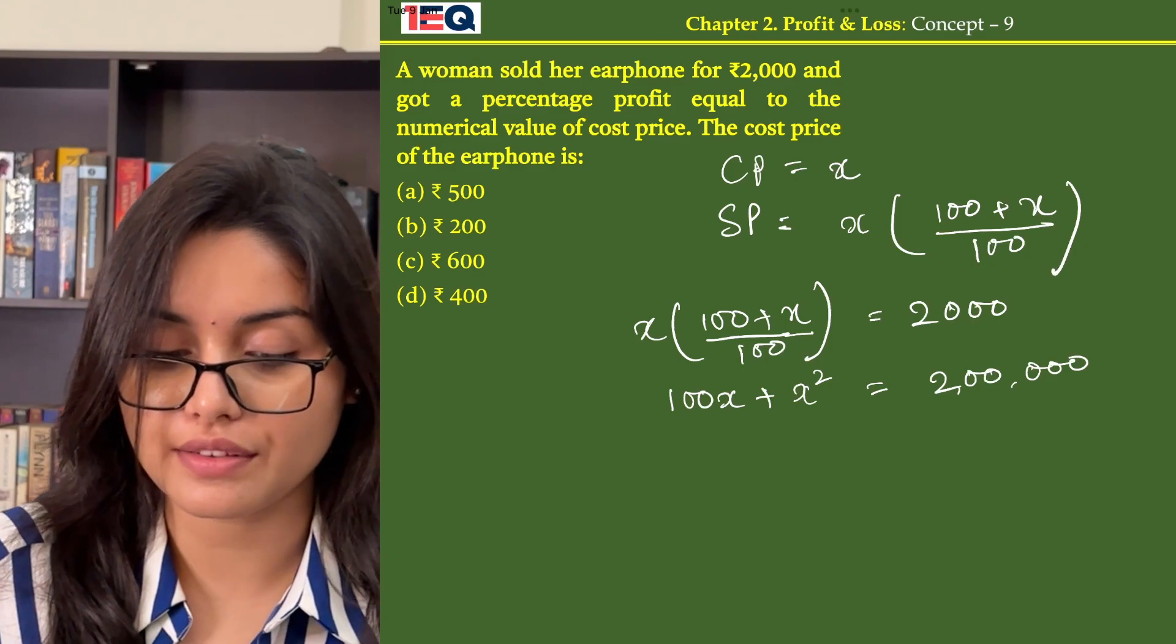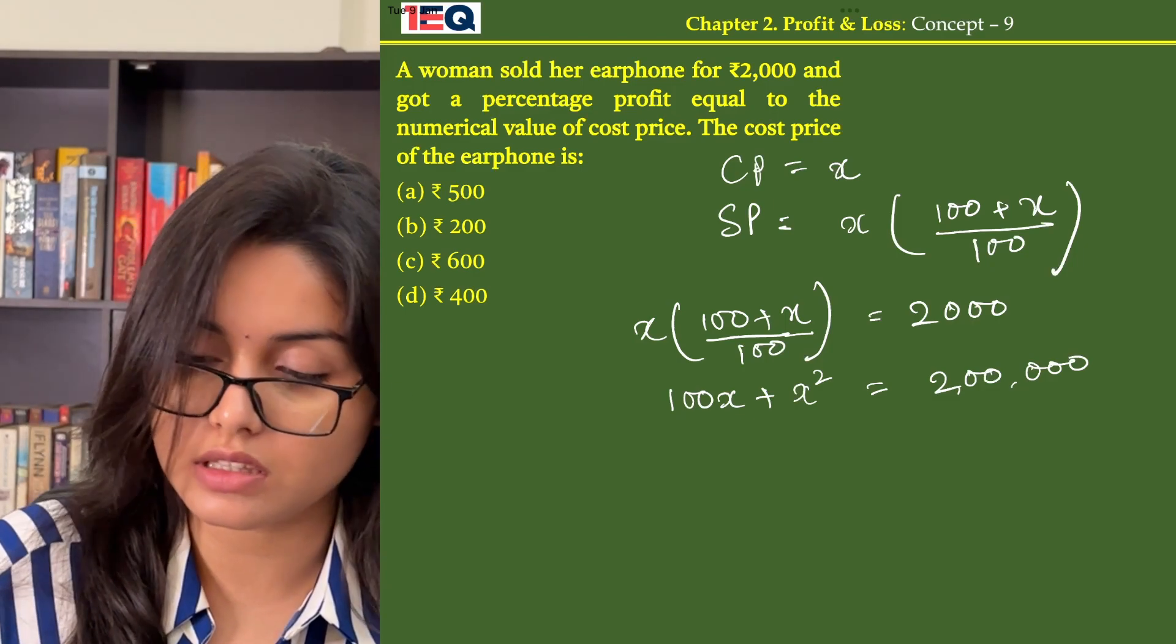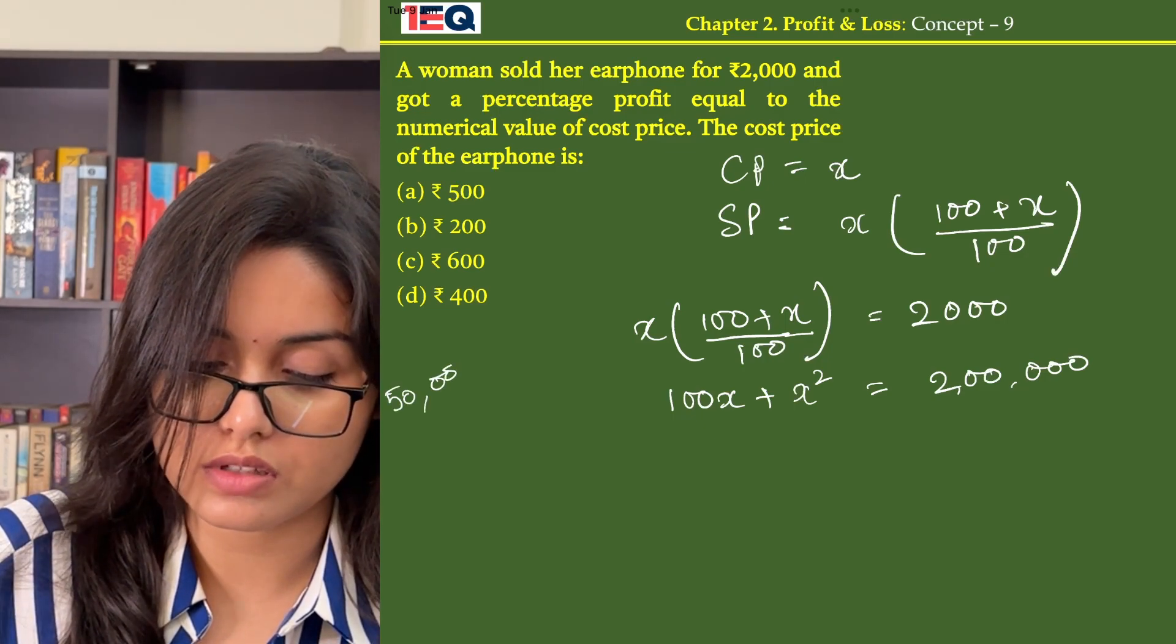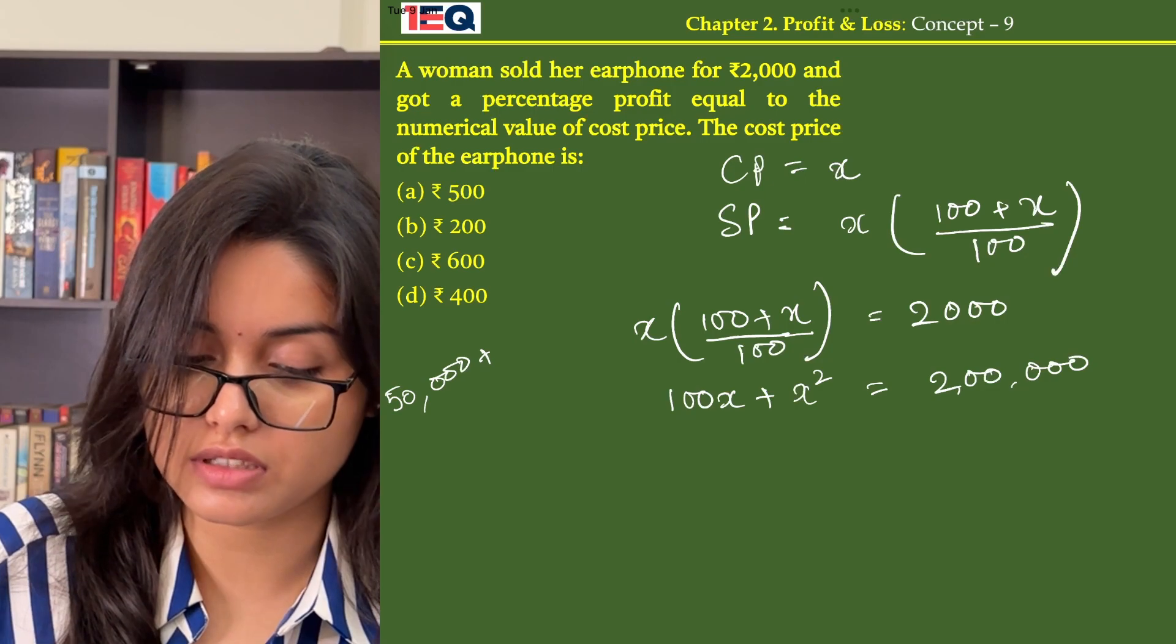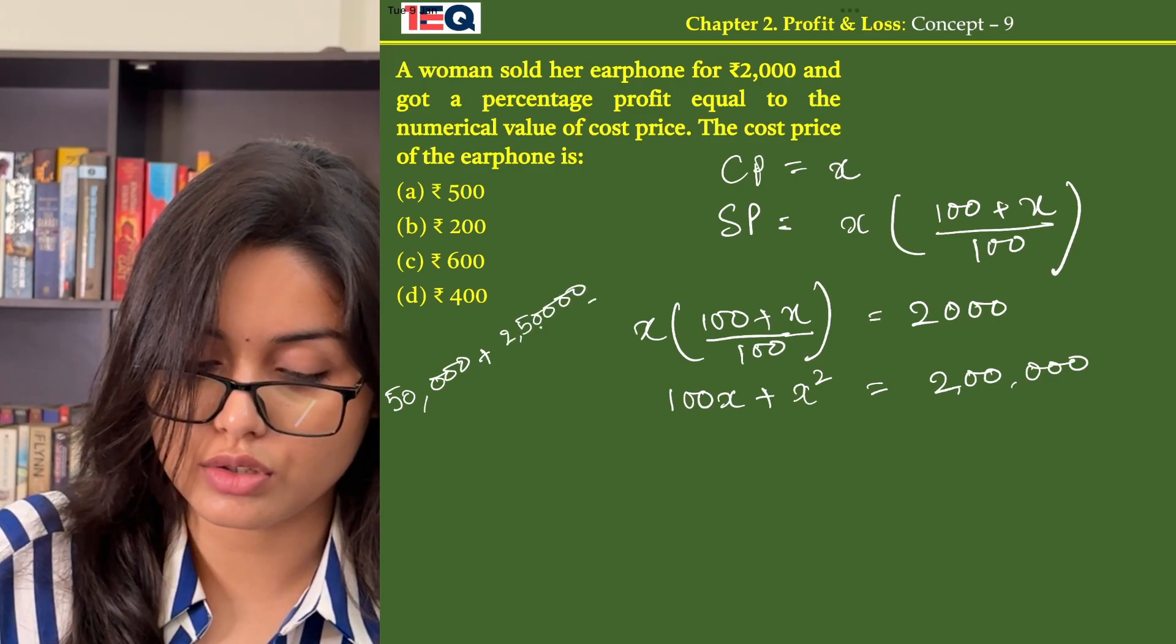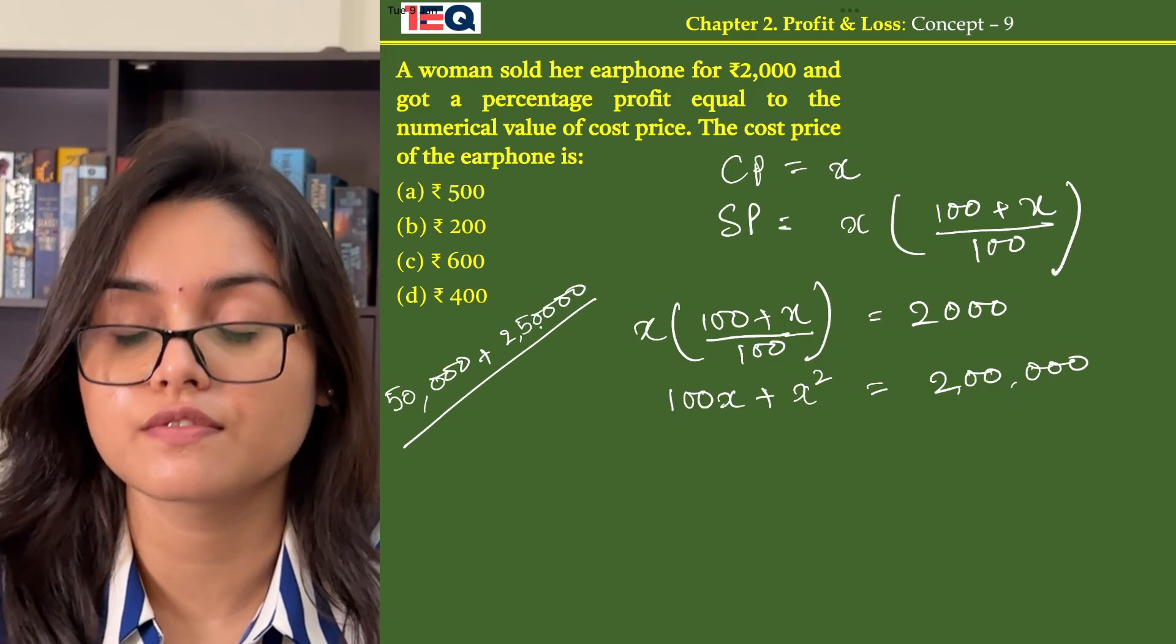Let's start off with 500. So 100 into 500 is 50,000 plus 500 square is 2 lakh 50,000. Now the total is equal to 3 lakh which is not matching with the other side.